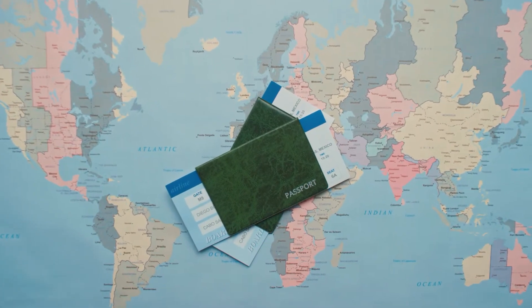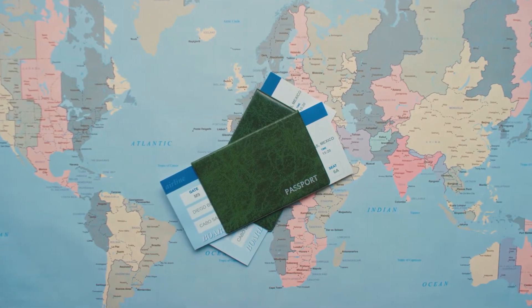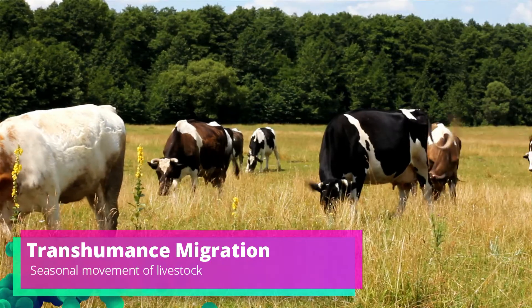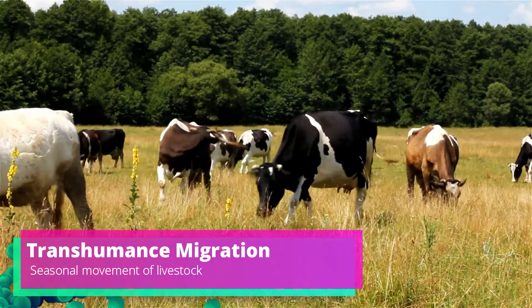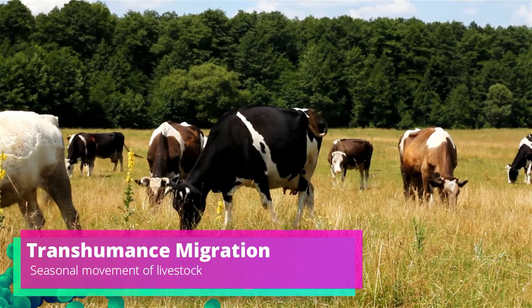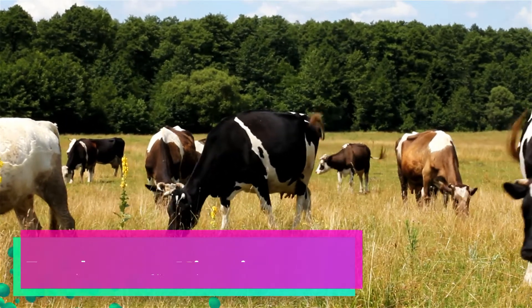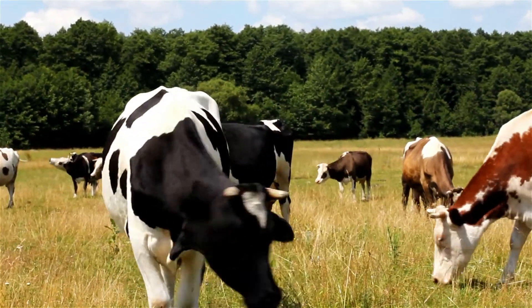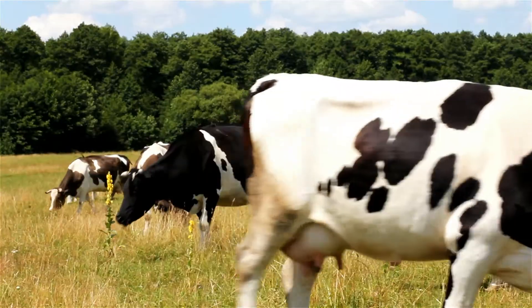People are choosing to emigrate out of their home country and immigrate into the new country based on their own free will. They're not forced to do so, and again, they keep those ties between the two different geographic places. Next we have transhumance migration, and this one's a little bit different. It's connected to agriculture and the seasons. Here we're seeing movement happen with livestock and animals, and the reason why it's occurring is based off the environment.